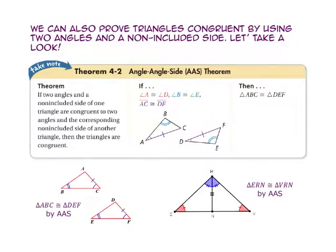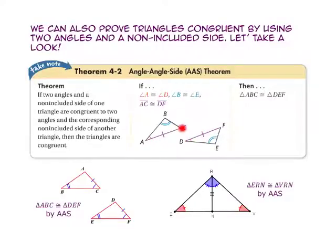We can also prove triangles congruent by using two angles and a non-included side. The angle-angle-side theorem states: if two angles and a non-included side of one triangle are congruent to two angles and the corresponding non-included side of another triangle, then the triangles are congruent. Here, angle-A is congruent to angle-D, angle-B is congruent to angle-E, and side-AC is congruent to side-DF — where side-AC is not included between angles-A and B. Therefore, triangle-ABC is congruent to triangle-DEF.